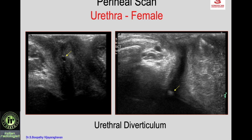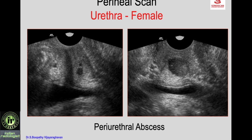Examples of abnormalities on perineal scan: adjacent to the urethra you may see a cystic area — urethral diverticulum — and a proximal urethral diverticulum filled with milk of calcium appears as an echogenic mass. In periurethral abscess, between the urethra and the vagina you see a tender fluid collection with posterior enhancement.